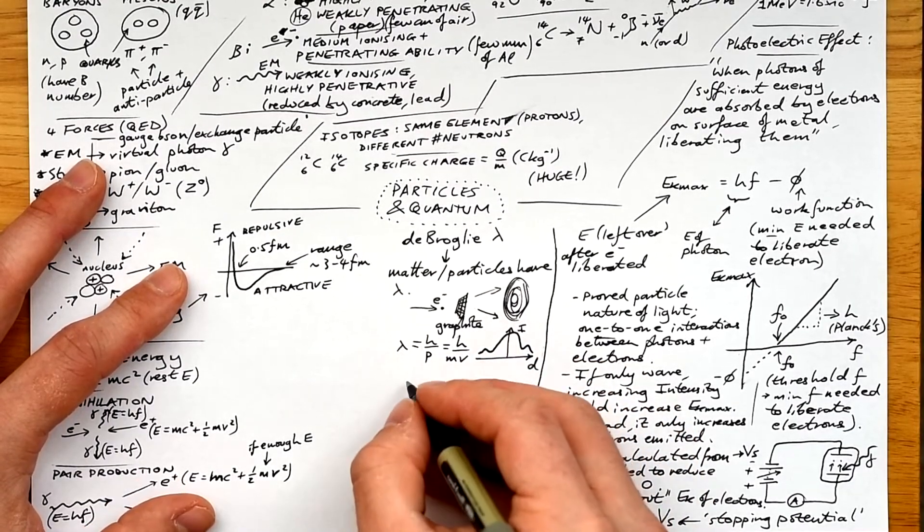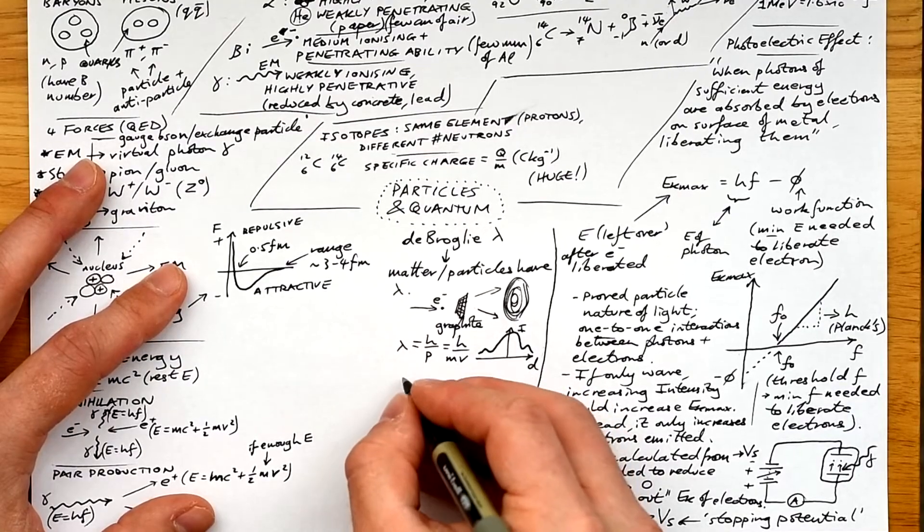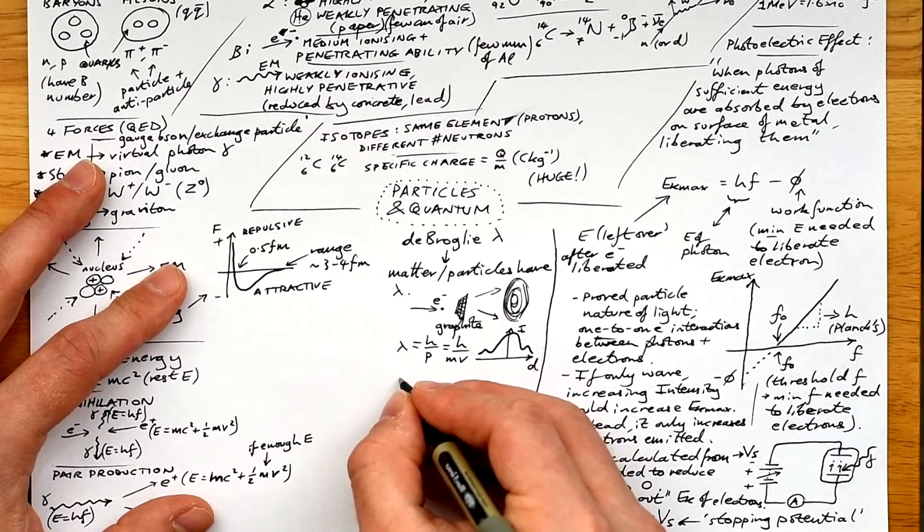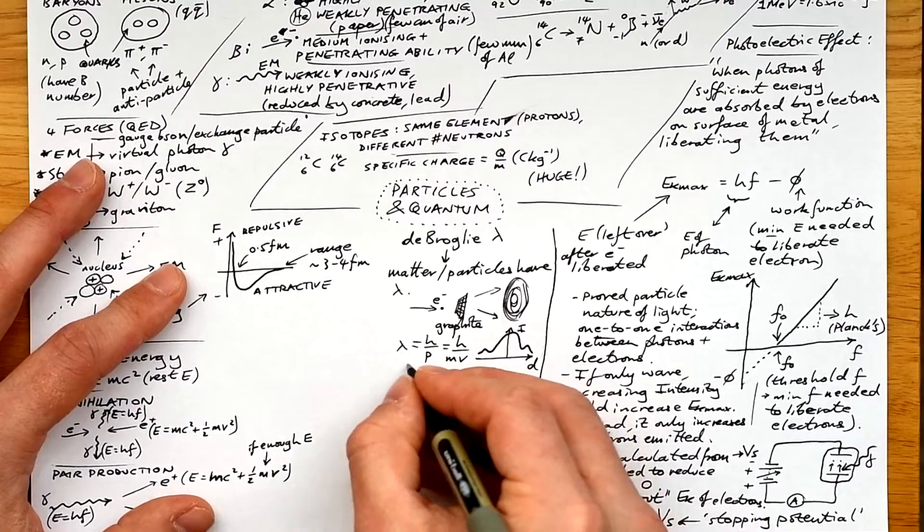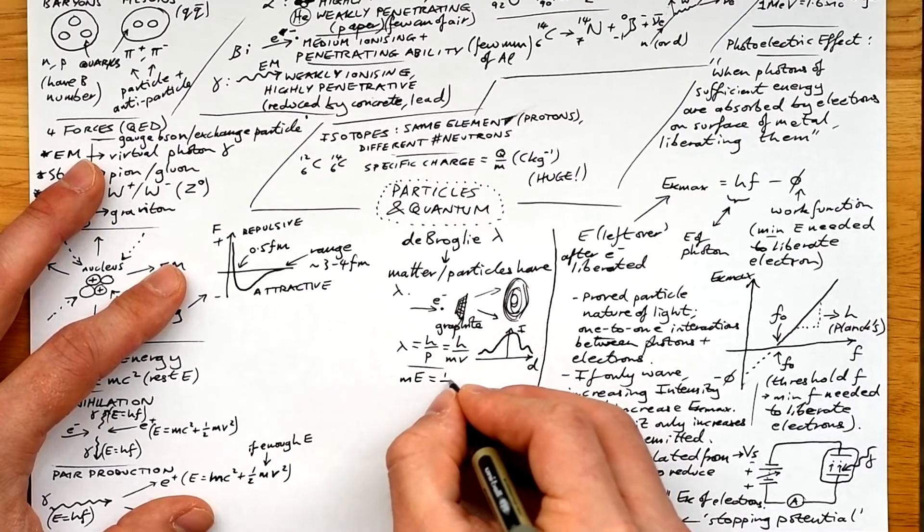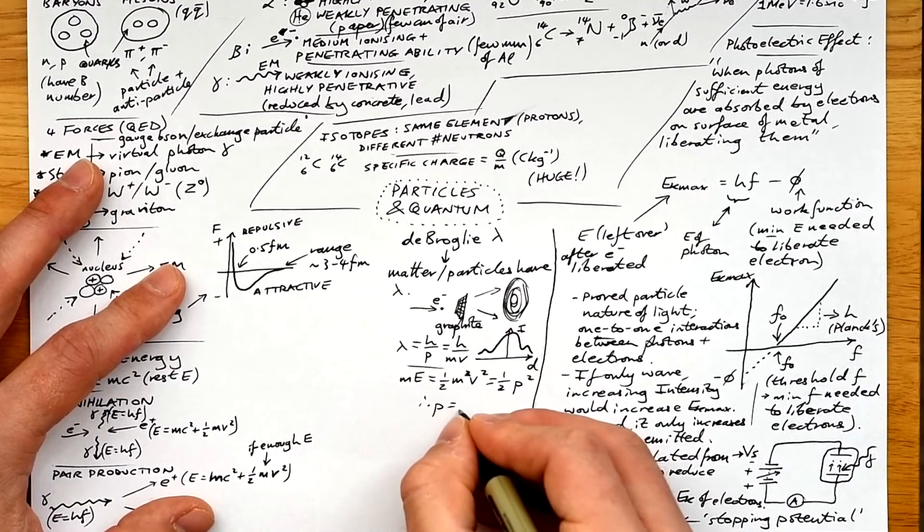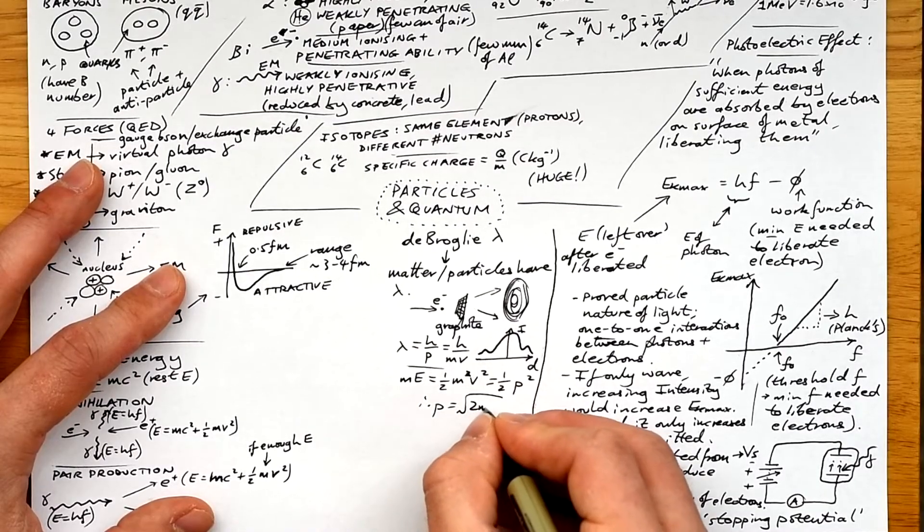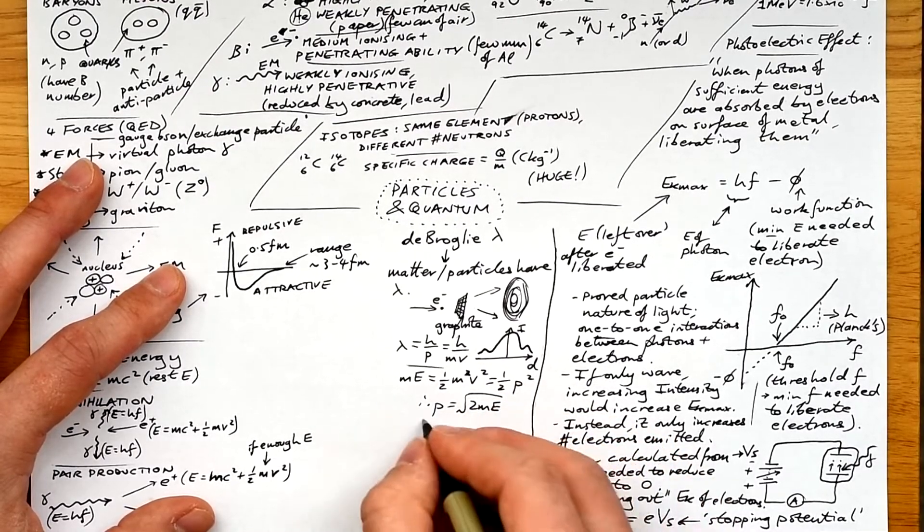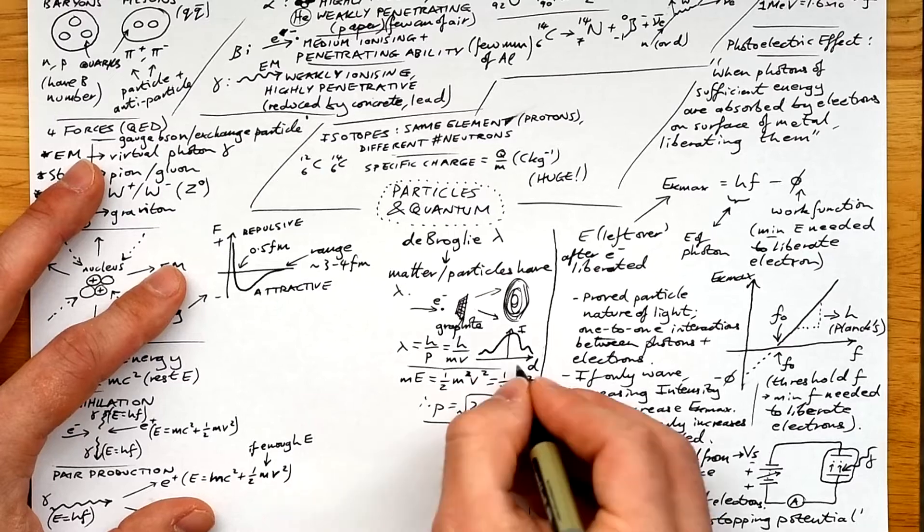Quite often we'll be given the energy of electrons, but we'll have to find out the momentum in order to put it into the equation. So we find that by doing E equals half MV squared, times the whole thing by M, and that gives you M E equals half P squared. Rearranging we get momentum P equals root 2M times the energy.